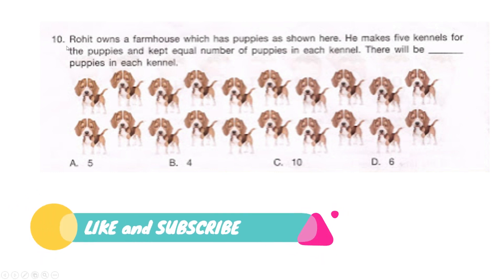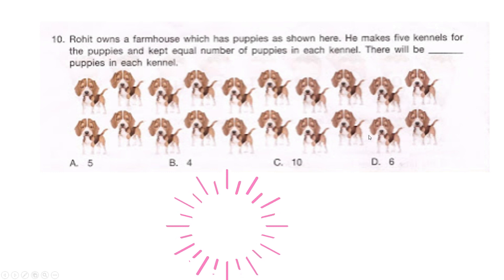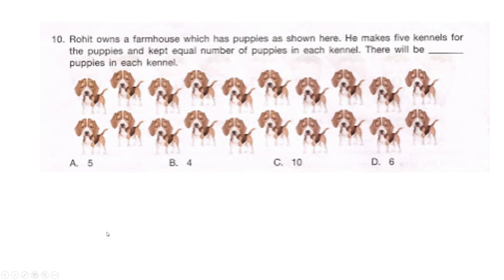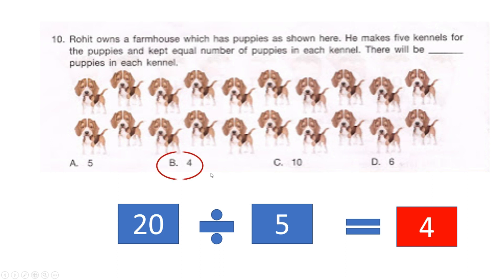Last question: Rohit owns a farmhouse with puppies. He makes five kennels and keeps an equal number of puppies in each. How many puppies per kennel — option A: 5, option B: 4, option C: 10, or option D: 6? The total number of puppies is 20. Dividing 20 equally into 5 kennels gives 20 ÷ 5 = 4, which is option B — our correct answer.